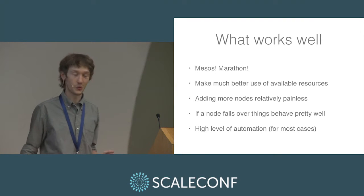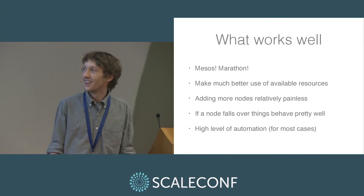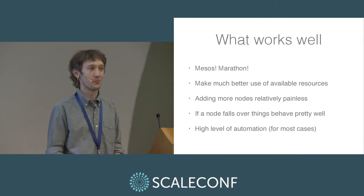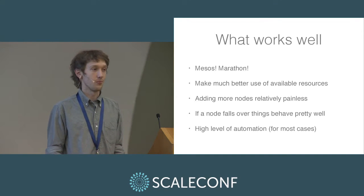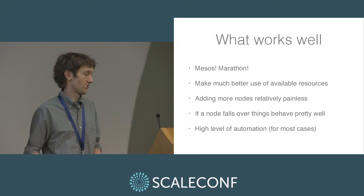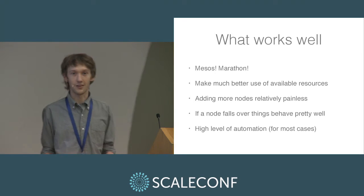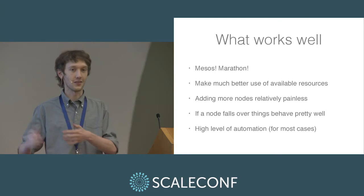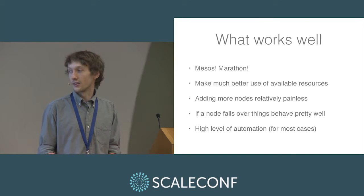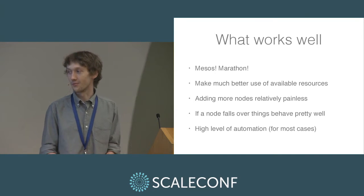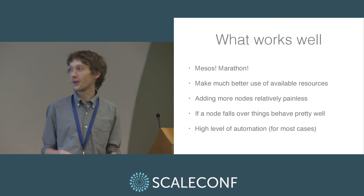What works well? We really like Mesos and Marathon — stuff just runs really easily and we're making much, much better use of our resources. We've been just adding nodes to scale, which has been pretty painless. Occasionally a node has fallen over and containers just get moved to another worker, which works great. And we've achieved what I think is a reasonably high level of automation, though I don't think every application quite fits on the stack yet.